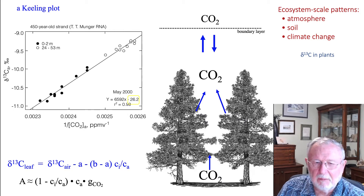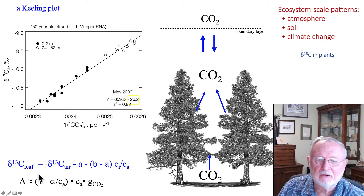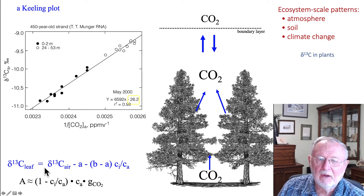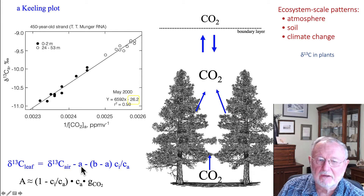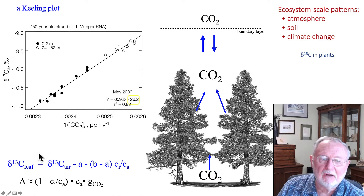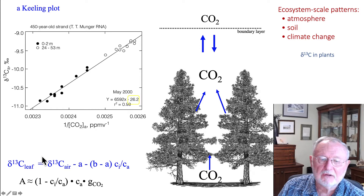The intercept of that linear relationship is the flux-weighted integrated value of respiration. Remembering from before, that might be analogous to the isotope ratio of the leaf, which would then allow us to work backwards to figure out what the long-term CI/CA ratio was, because the air outside the boundary layer is going to be relatively constant over a period of hours or days.